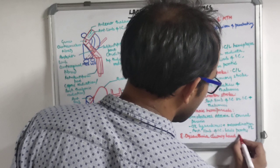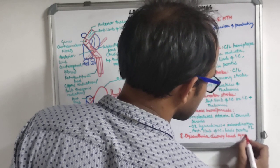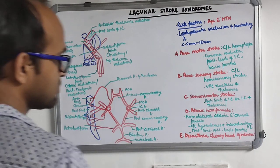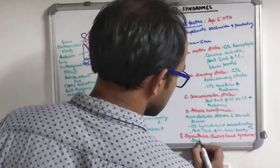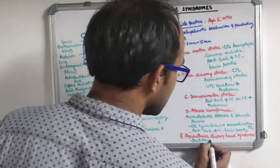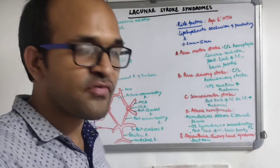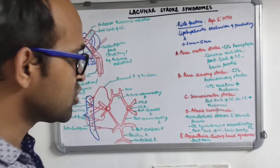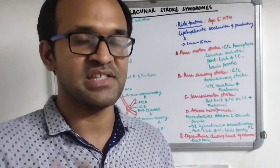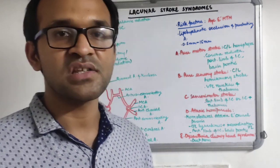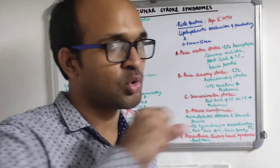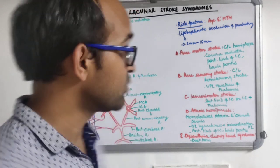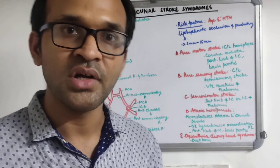The last syndrome is dysarthria clumsy hand syndrome, which occurs when there is injury in the deep pons. There will be dysarthria, dysphagia, loss of fine motor control of the hands, and supranuclear facial weakness. Because of the supranuclear facial weakness, there is dysarthria, dysphagia, and loss of fine motor control of the hand. This concludes all the lacunar stroke syndromes.